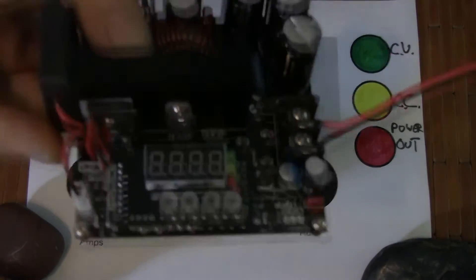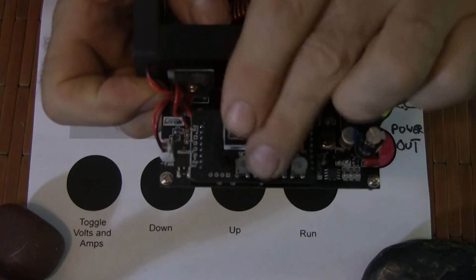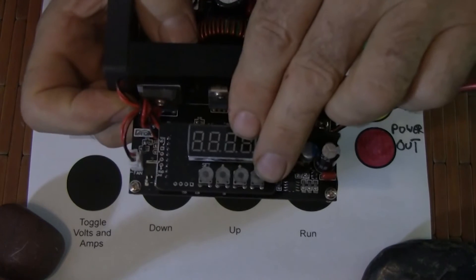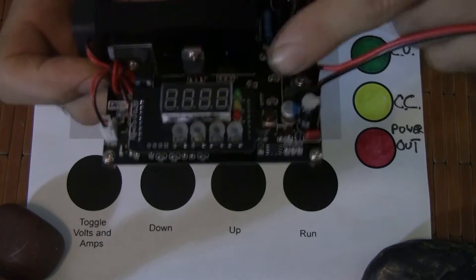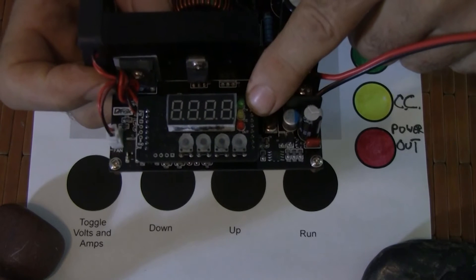So here's the DROC. Here's the display. Here's these four buttons down here. And they're hard to see, but right along here are the three lights, red, yellow, and green.